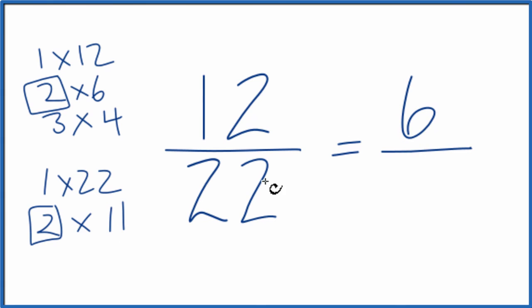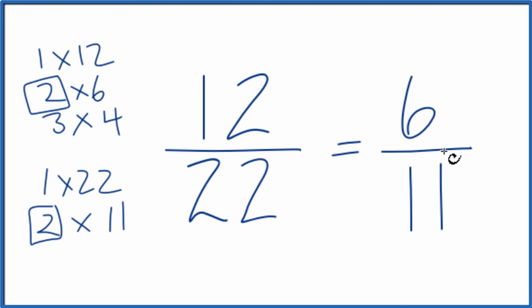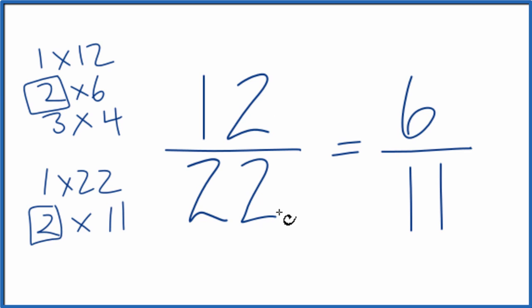12 divided by 2 gives us 6, and 22 divided by 2 gives us 11. So we've simplified 12/22 down to 6/11. These are equivalent fractions — if you divide 12 by 22 or 6 by 11 you'll get the same decimal answer. We've reduced 12/22 down to 6/11.